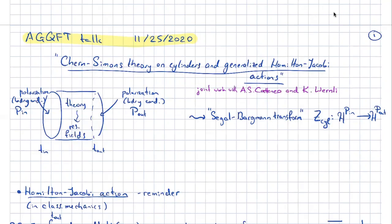The result of this computation can be interpreted in different ways. For instance, if there are no residual fields that we don't integrate out, then it can be interpreted as a Siegel-Bargman transform, or a version of a Siegel-Bargman transform — some kind of operator which compares for you the space of states presented in one polarization with the space of states presented in a different polarization.